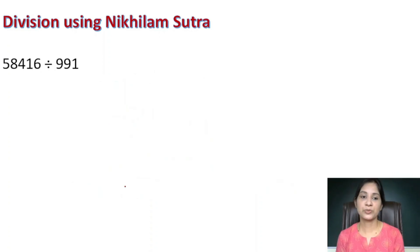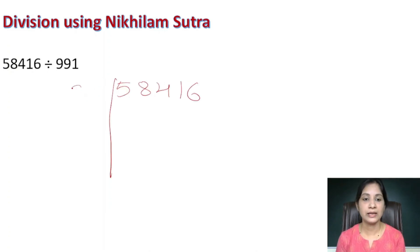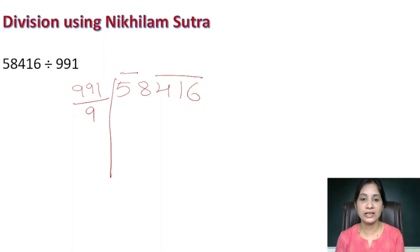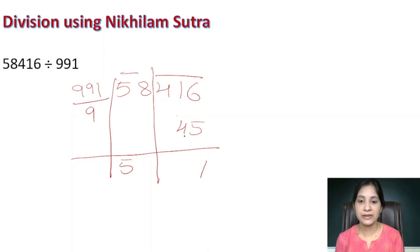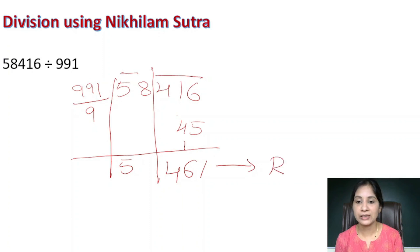The last problem is 58,416 divided by 991. The complement is 9 and we group into 3-digit groups. Write 5 as it is. Multiply 9 by 5: 45. Add to the next group to get 11. Continue to get 461. Since 461 is less than 991, the remainder is 461 and the quotient for this question is 58.